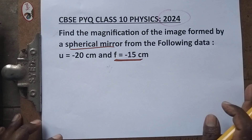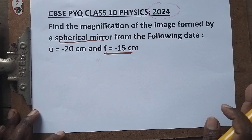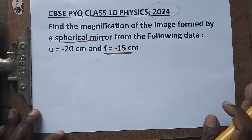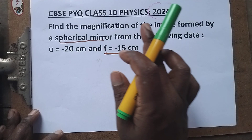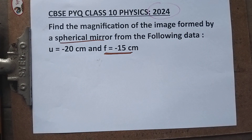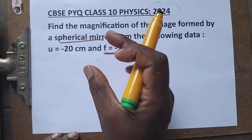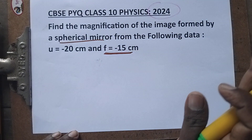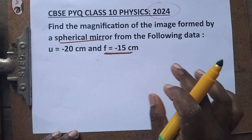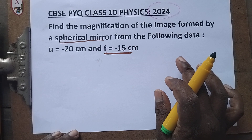Hello students, today we are going to see a Class 10 Physics previous year question paper solution. If you want more question paper solutions, subscribe to my channel and watch regularly. This is a very important question for your board exam — whether it's a convex lens or mirror problem, you will definitely get one. It may be difficult at the standard level, so you should understand what is given and what is asked.